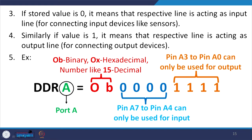For example, with DDRA set using binary notation (0b prefix), pins PA7 to PA4 can only be used for inputs, while pins PA3 to PA0 can only be used for outputs. This corresponds to the respective port A pin numbers on the microcontroller.